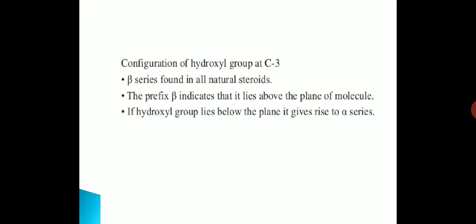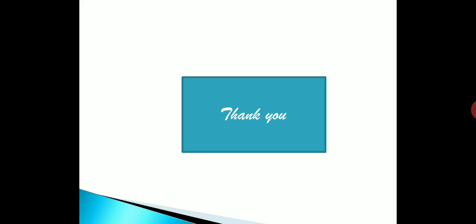Configuration of the hydroxyl group at C3: the beta series is found in all natural steroids, and the prefix beta indicates that it lies above the plane of the molecule. If the hydroxyl group lies below the plane, it gives rise to the alpha series.